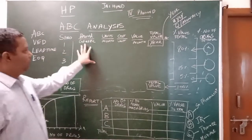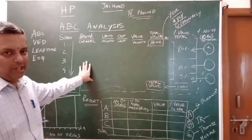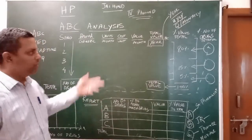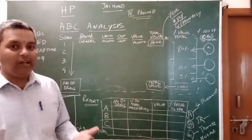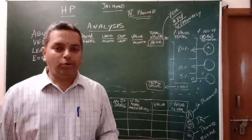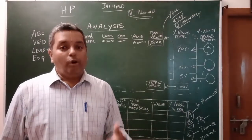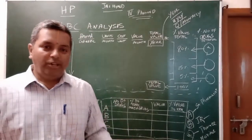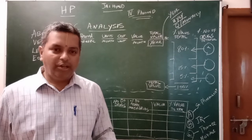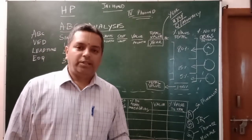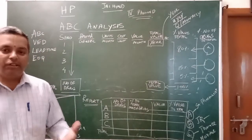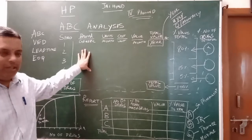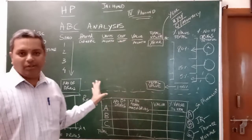In ABC analysis, you will work with brand names or generic names of drugs. Related analyses include VED analysis — Vital, Essential, Desirable — where you also use a composition or generic name. The national list of essential medicines and hospital specialty drugs have significant value in VED analysis.